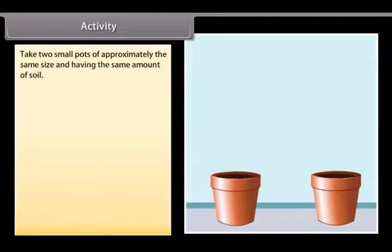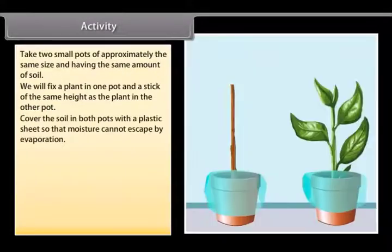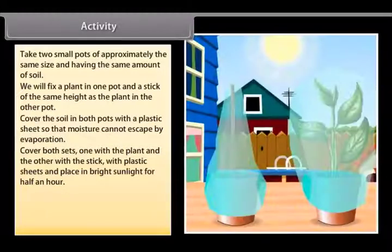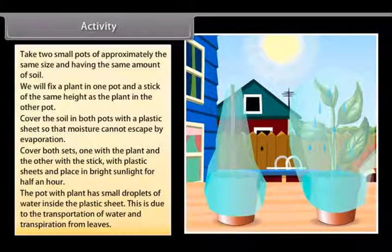Activity: Take two small pots of approximately the same size with the same amount of soil. Fix a plant in one pot and a stick of the same height as the plant in the other pot. Cover the soil in both pots with a plastic sheet so that moisture cannot escape by evaporation. Then cover both pots with plastic sheets and place them in bright sunlight for half an hour. The pot with the plant will show small droplets of water inside the plastic sheet, due to the transportation of water and transpiration from leaves.